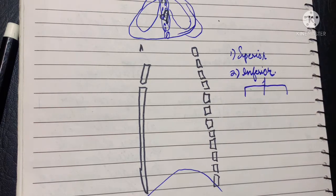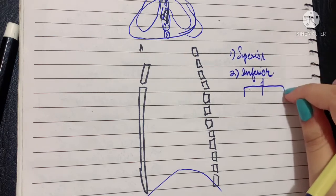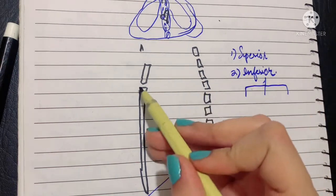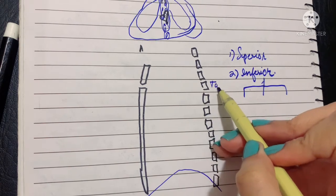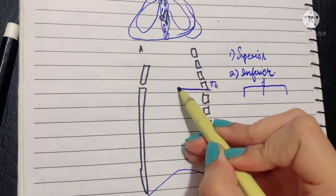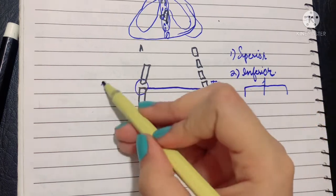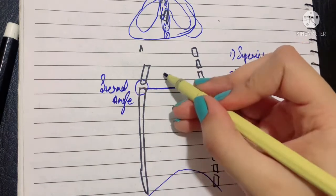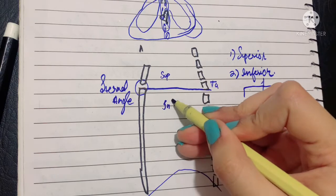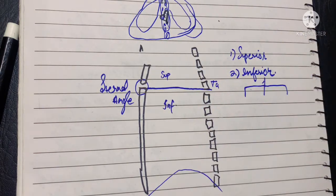The mediastinum is divided into a superior and an inferior mediastinum. An imaginary line is drawn from the lower border of the fourth thoracic vertebra extending anteriorly to the manubriosternal joint or sternal angle. Above this line is the superior mediastinum, and below it is the inferior mediastinum.